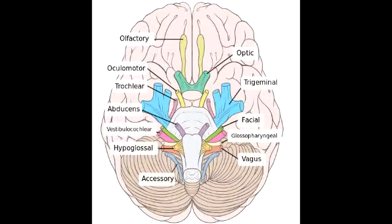What is the name of cranial nerve 1? The name of cranial nerve 1 is the olfactory nerve. Its function is for smell, and it's the only cranial nerve without a thalamic relay to the cortex. Cranial nerve 1 is a sensory nerve.